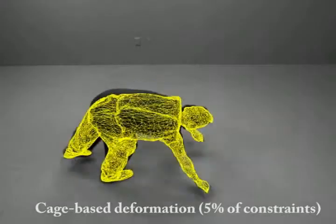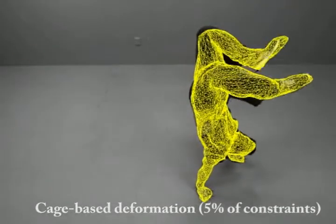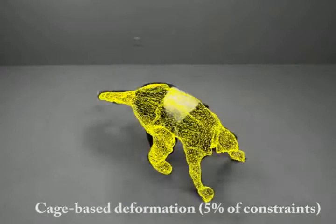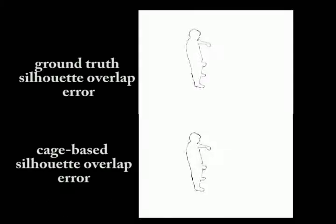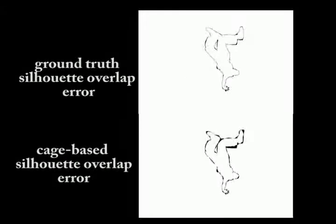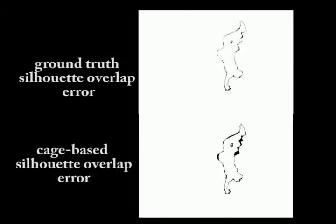However, the key contribution is to solve a sparse linear system to estimate the base cage parameters reproducing the desired deformation of the enclosed mesh given sparse positional constraints directly expressed on the enclosed mesh itself.